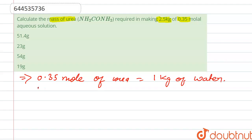Here, mole of urea is 0.35 and we know that the molar mass of urea is 60 gram per mole.